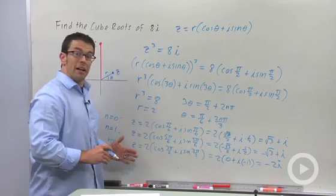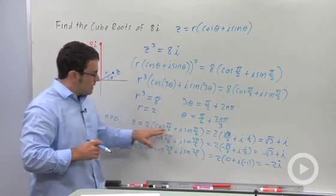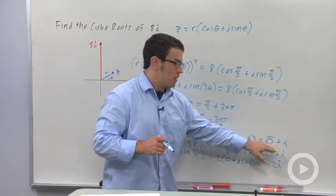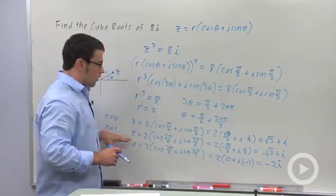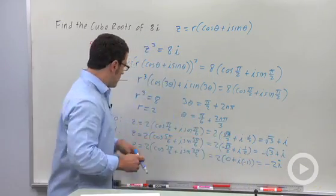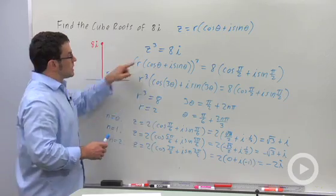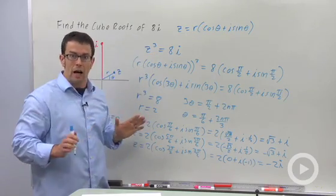And it turns out that I'm done. If I calculated for n equals 3, I'd end up getting the exact same root I got here. If I calculated for n equals 4, I'd get this one. N equals 5, I'd get this one. And I'd keep cycling through these over and over again. It turns out that there are only three distinct roots, three distinct cube roots of any complex number.